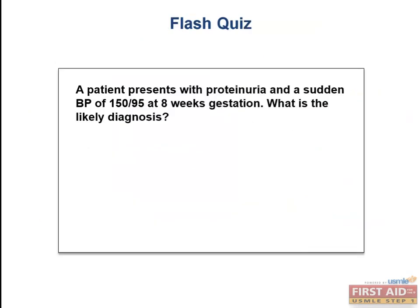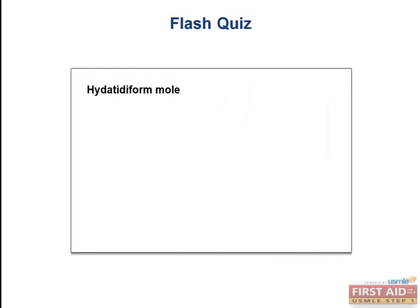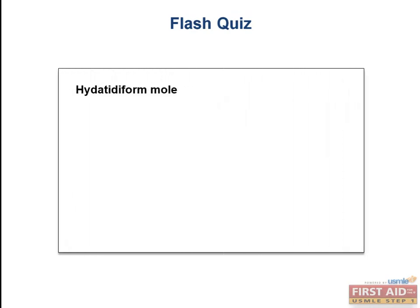Flash quiz: a patient presents with proteinuria and a sudden blood pressure of 150/95 at 8 weeks gestation. What is the likely diagnosis? Hydatidiform mole. Because if we were to see increased blood pressure and proteinuria after 20 weeks, we'd be looking at preeclampsia, but before 20 weeks — hydatidiform mole.